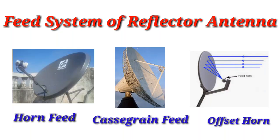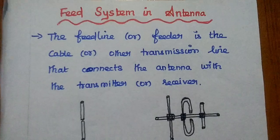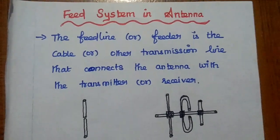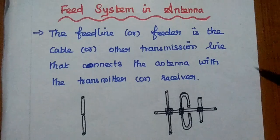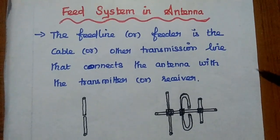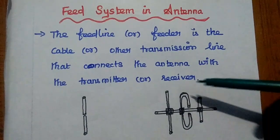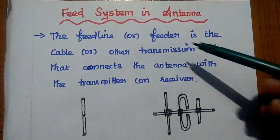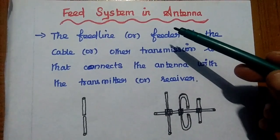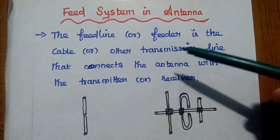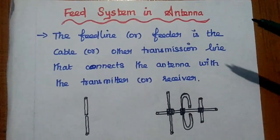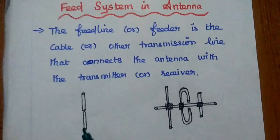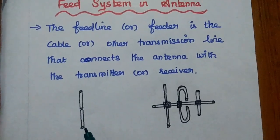Now we are going to discuss the various feed systems of reflector antennas. The feed line or feeder is the cable or other transmission line that connects the antenna with the transmitter or receiver. The feeder is nothing but the cable or any other transmission line used to excite the antenna to transmit the signal. The antenna is simply a metallic rod.